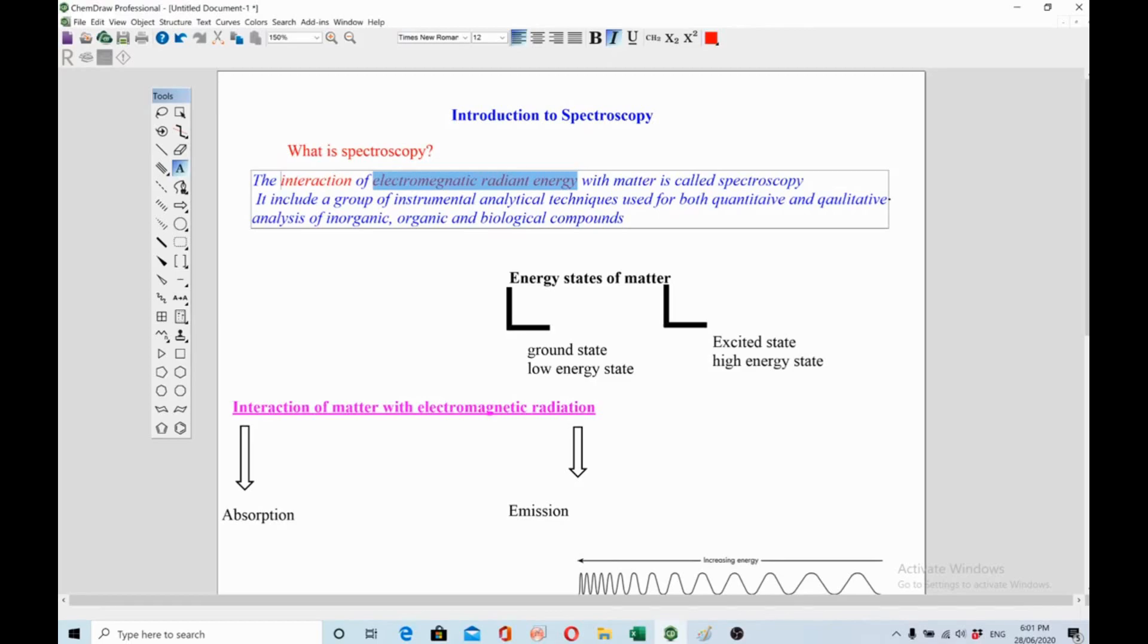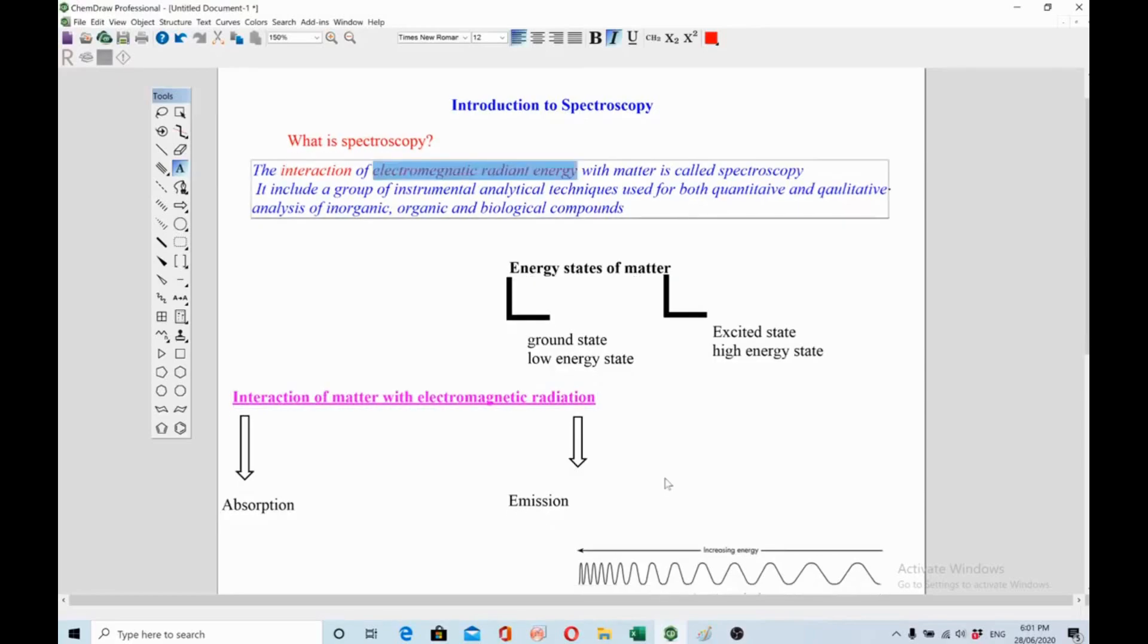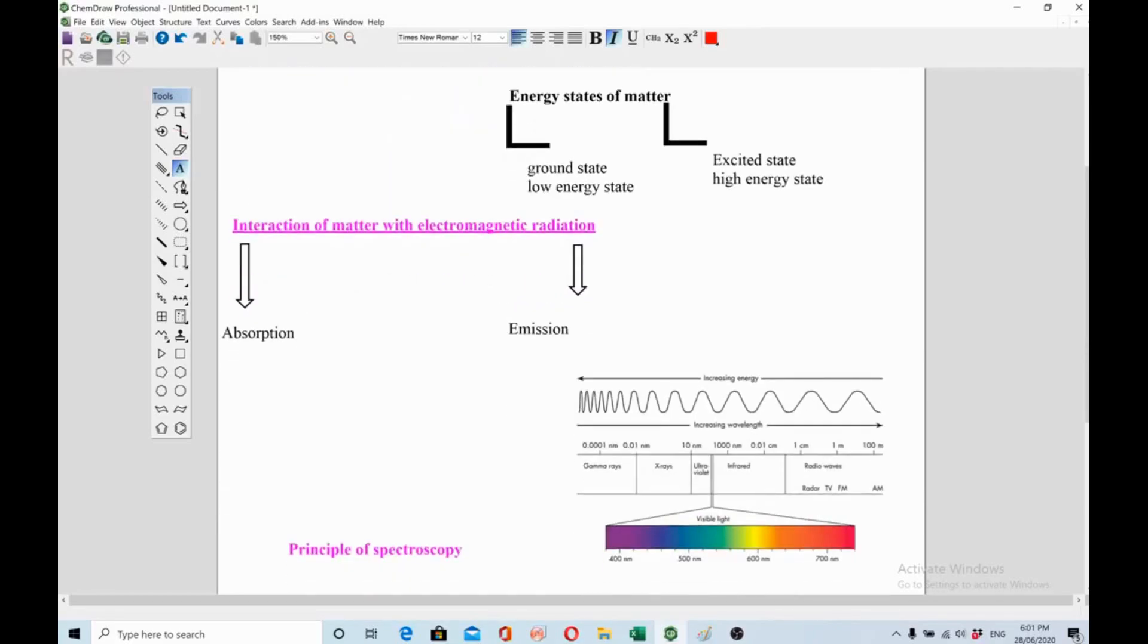Now the last question remaining in this definition is what is electromagnetic radiation. These are the radiations which are present in our spectrum. So the main focus of our spectroscopy is visible region which lies from 400 nanometer to 700, and this is like ultraviolet or visible spectrum. We will discuss the UV visible spectroscopy, we will use this region of spectroscopy.